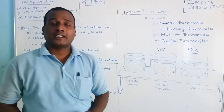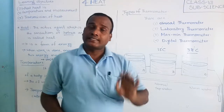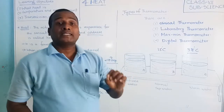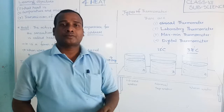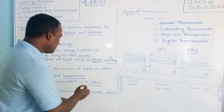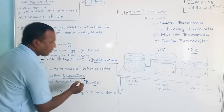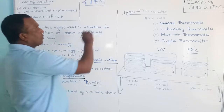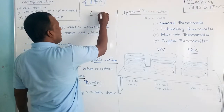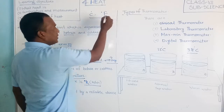There are three temperature scales: Kelvin, Celsius, and Fahrenheit. The SI unit of temperature is degree Kelvin, but we generally also use degree Celsius and degree Fahrenheit scales.